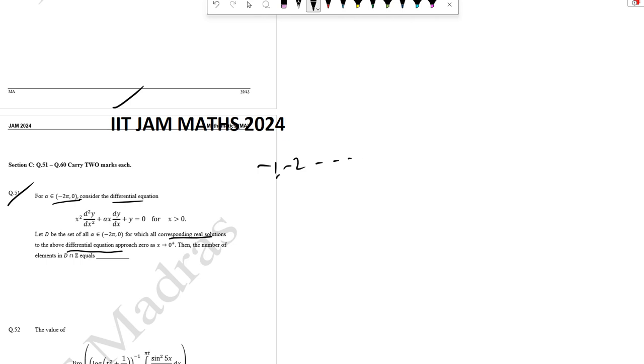Minus 1, minus 2, dot dot dot, minus 6. We can check for alpha as x tends to 0 and the equation can be approached. So let x equal to e to the power z, meaning z equal to log x. So we get D times D minus 1 into y plus alpha Dy plus y equal to 0.